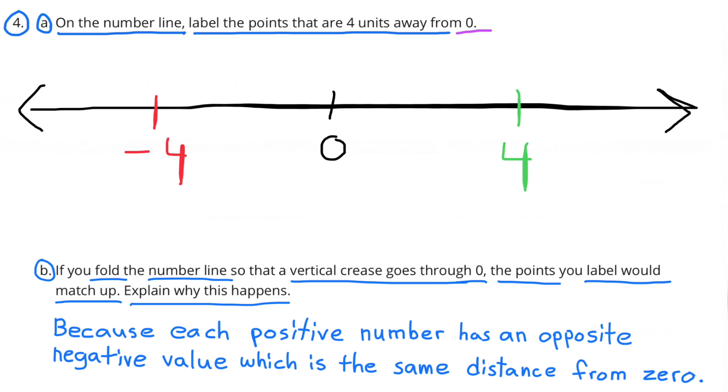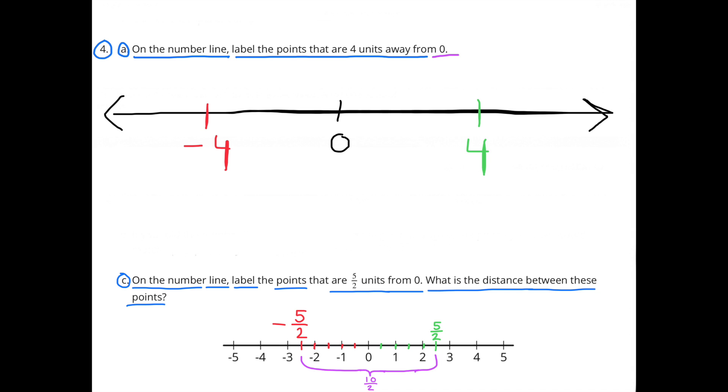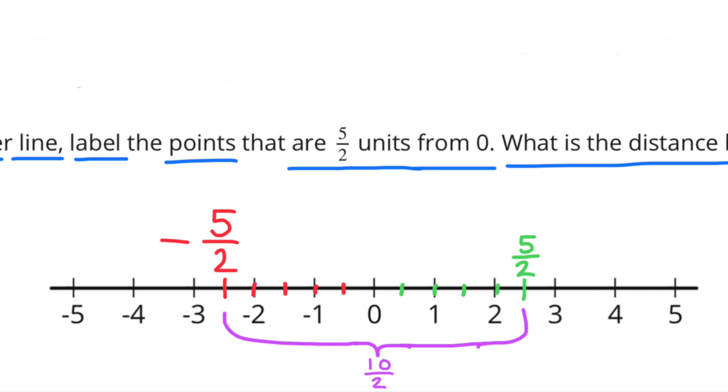Number 4 C. On the number line label the points that are 5 halves units from 0. What is the distance between these points? I forgot to put my points in there so make sure that you put the points.